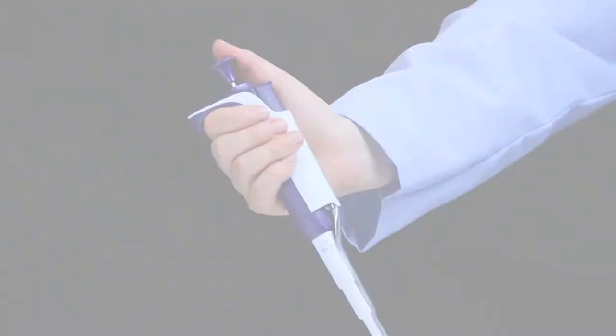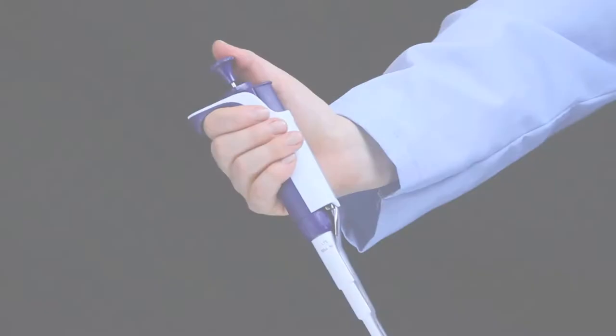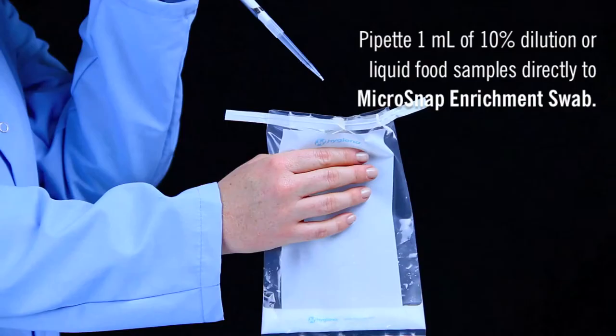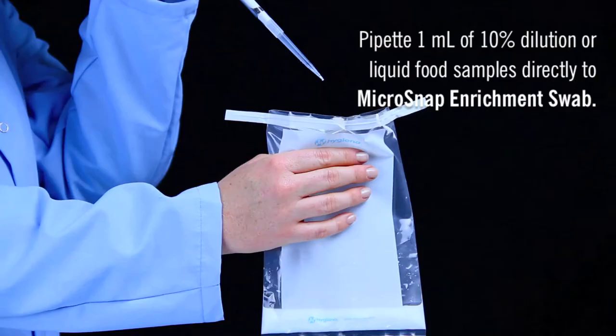For product samples, you may prepare a 10% dilution or add 1 ml of liquid food samples directly to the enrichment device. Replace the swab in the tube.